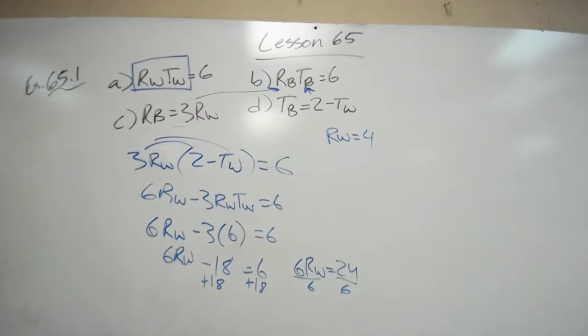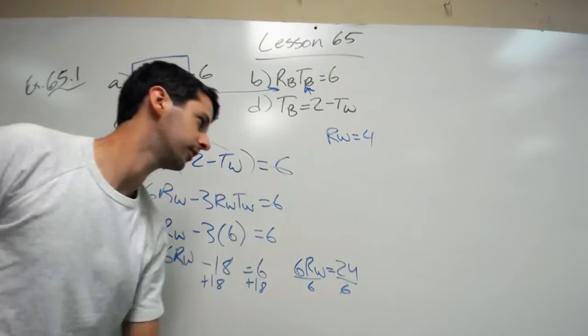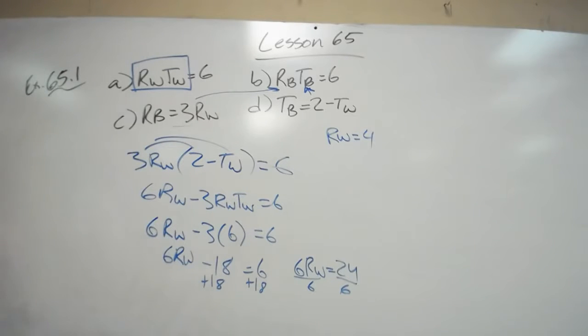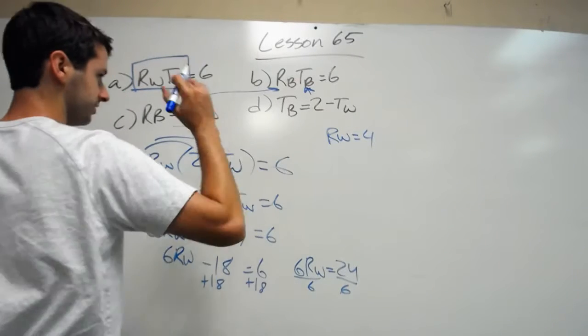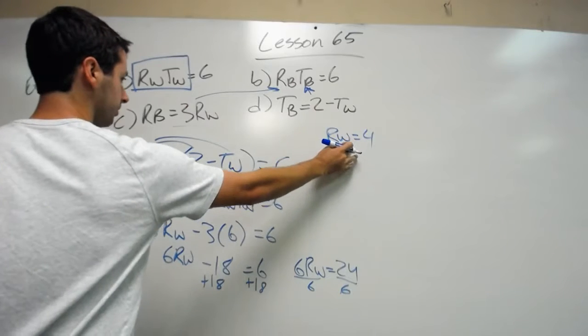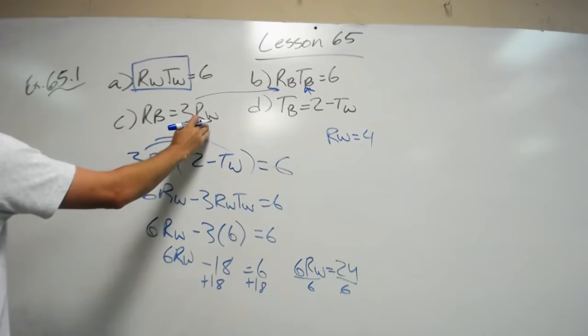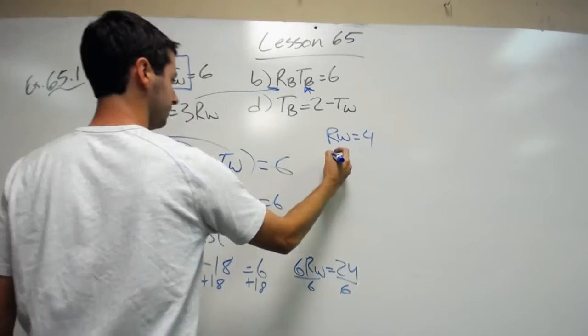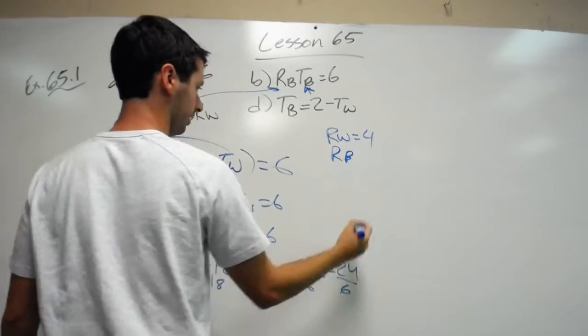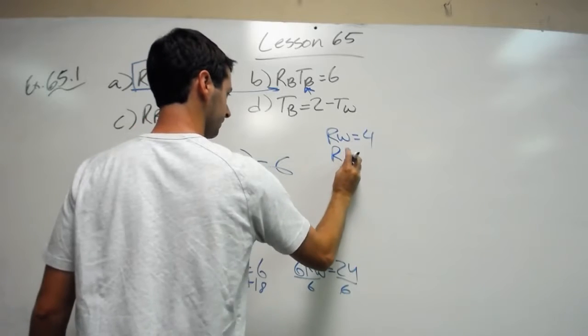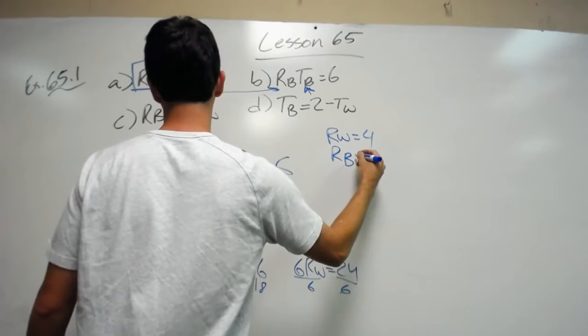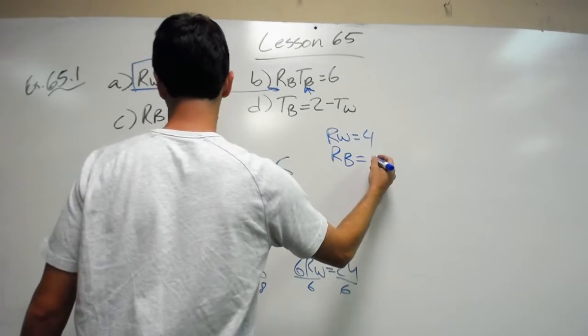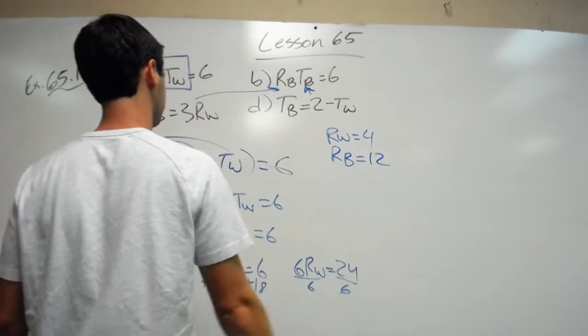Have we solved? Not yet. We want all of the variables: rw, rb, tw, all these things. So we know rw, but it is easy from this point. I plug in rw here. Well, that'd be 3 times 4. So rb equals 12. 4 times 3, 12.